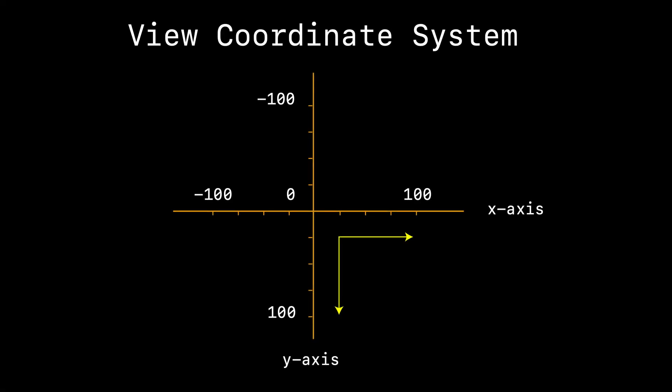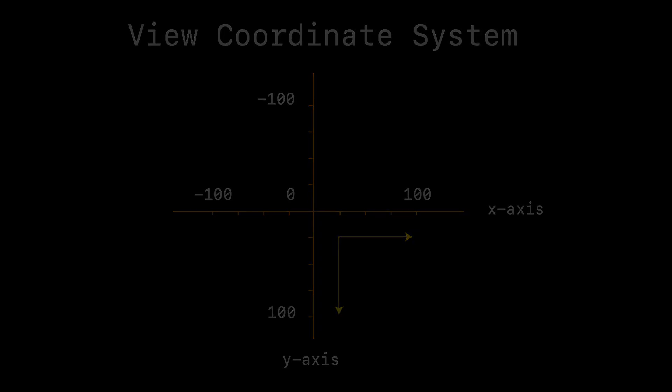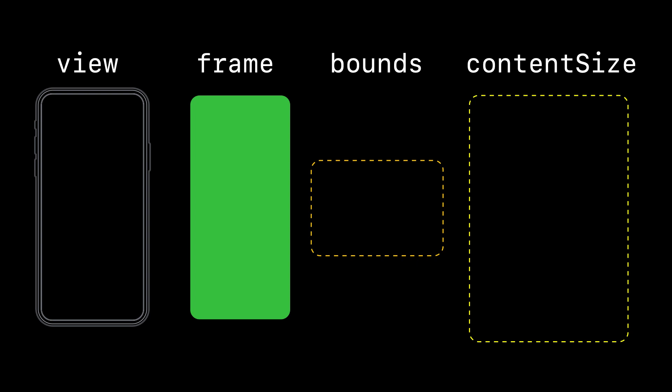The iOS coordinate system for presenting views looks like this — it's a Cartesian coordinate system with X going left, positive Y going down, and this is basically what we use to put views in our view controllers. The next thing to understand is just these three key concepts: frame, bounds, and content size.